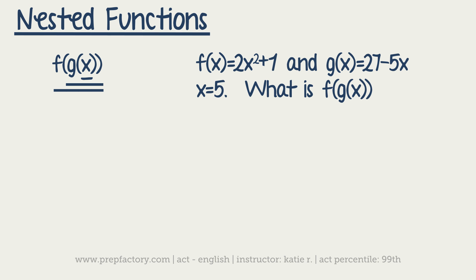Since we're going to start with our smallest thing, x, we're going to put that into g(x). So we have g of 5, which by the way just means g or y when x equals 5. So g of 5 equals 27 minus 5 times 5. So we've got 27 minus 25 or 2. So g of 5 equals 2.